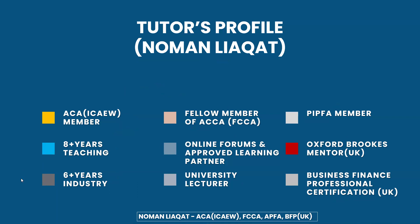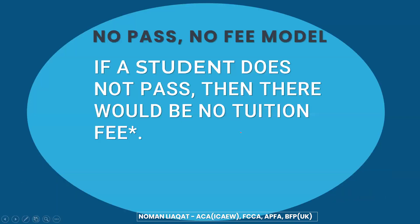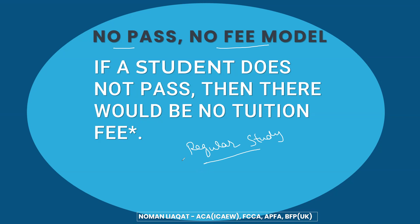Moving to the next slide, we will first discuss the No Pass No Fee model. Before that, let's discuss regular study or regular batch. Regular study means you will be enrolled, entitled to a lot of resources, and you will study like a student. But if unfortunately you fail, then when you study the next time, you have to pay some amount of fee. This is basically called regular study.